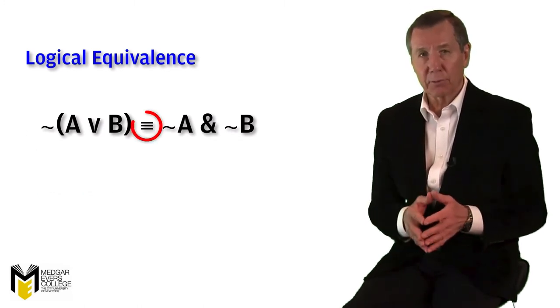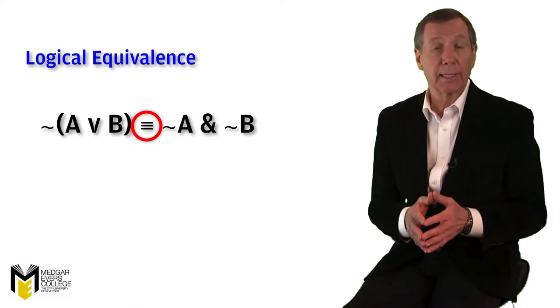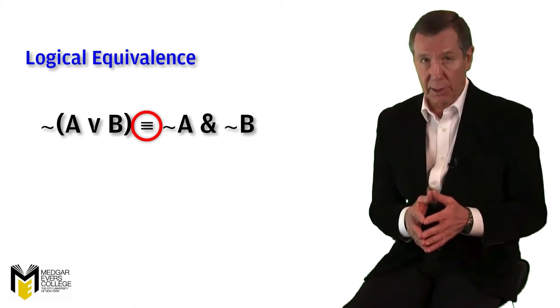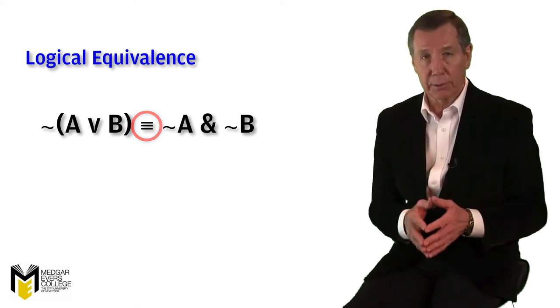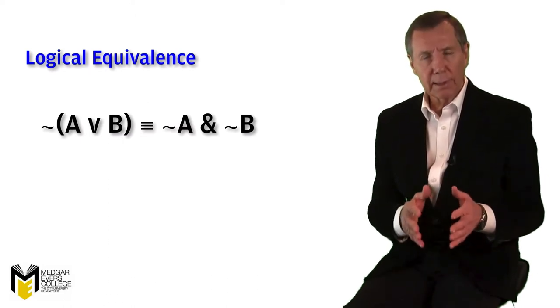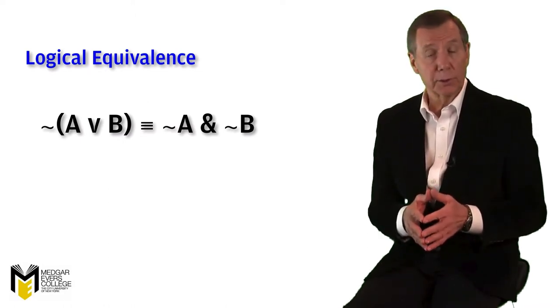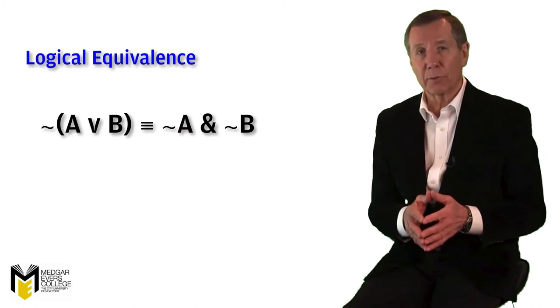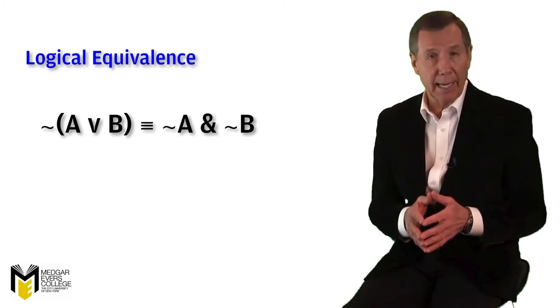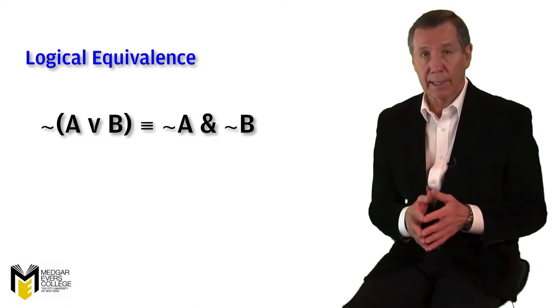We've interposed a triple bar between the two expressions to indicate their logical equivalence, which is what the biconditional means. But how do we prove it? By constructing a truth table in which the two expressions display identical truth values beneath their main connectives. Let's do that now.